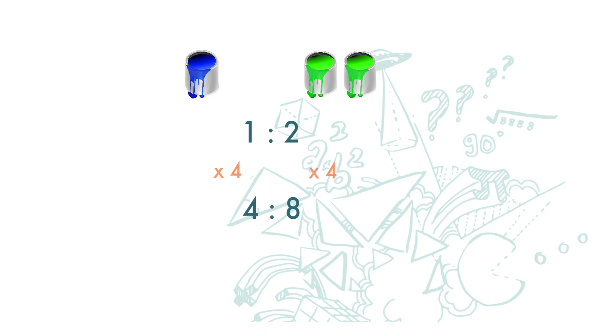One more thing that we should note is that when two sets of ratios are proportional, they are equivalent ratios. For example, the first ratio here is 1 to 2. The second ratio, after we simplify it, is also 1 to 2. The ratios 1 to 2 and 4 to 8 are equivalent ratios.